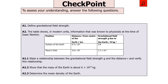The next question says: define the gravitational field strength; the table shows data known to Newton — state the relationship between gravitational field strength g and distance R and verify this relationship; show the mass of Earth is about 6 × 10²⁴ kg; and determine the mean density of the Earth. Pause the video now.